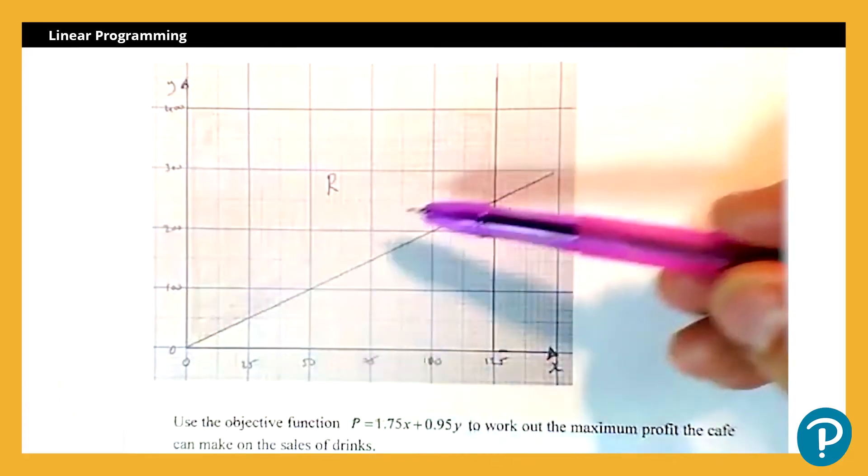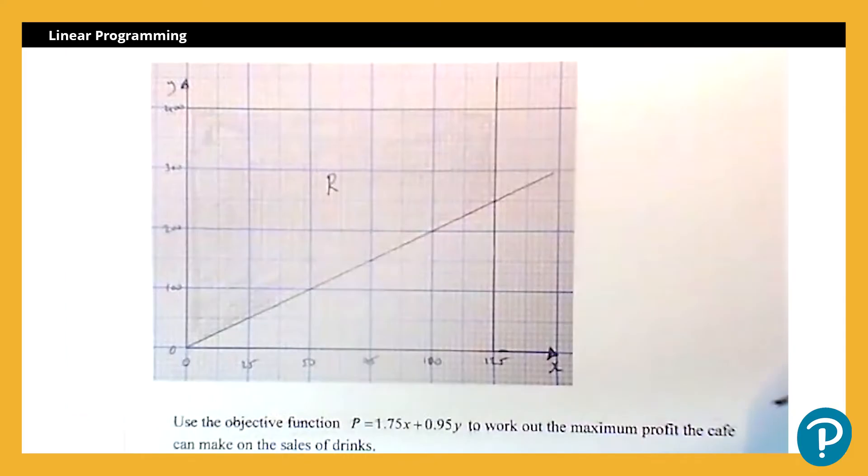The question then says use the objective function P = 1.75x + 0.95y to work out the maximum profit the cafe can make on the sale of drinks. So when we're looking at a feasible region, we're either looking to maximize or minimize an objective function. What we're interested in are the vertices around the outside of our feasible region.